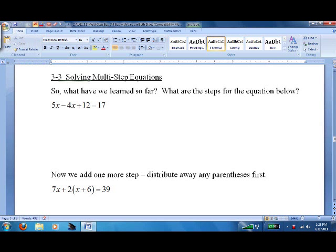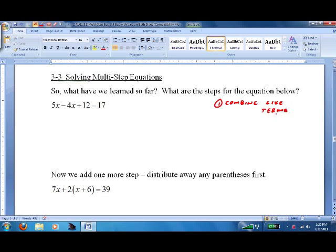How do we solve 5x minus 4x plus 12 equals 17? Step 1, combine like terms. So 5x minus 4x is just 1x, but we just write x, and everything else comes down.